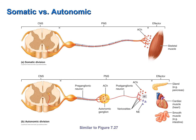Another difference between the somatic and autonomic divisions is their effectors. The effectors of the somatic division are exclusively skeletal muscles — organs under voluntary control. The effectors of the autonomic division are organs not under voluntary control, such as the pancreas, the heart, the GI tract, the urinary tract, and all glands.